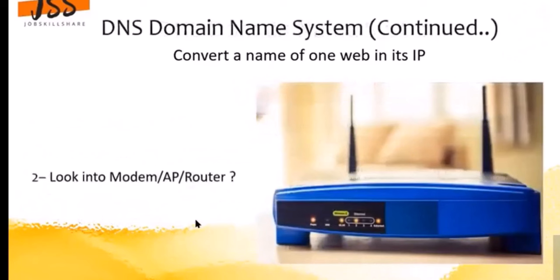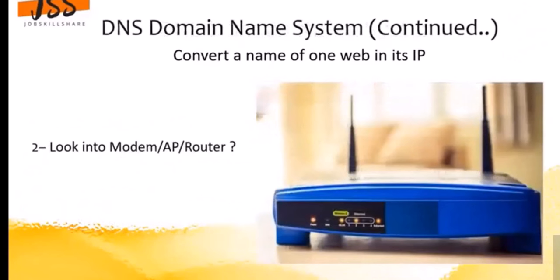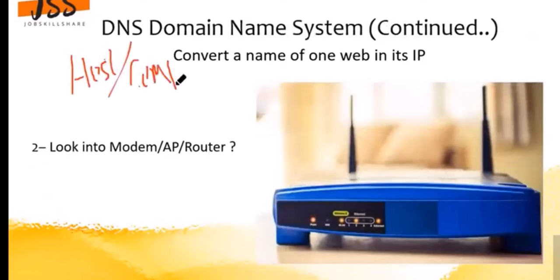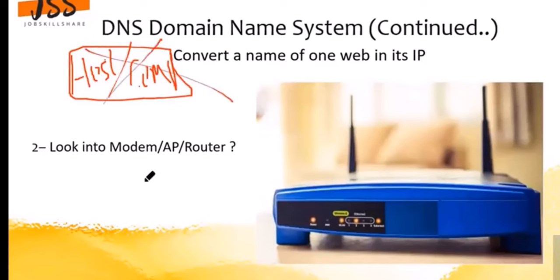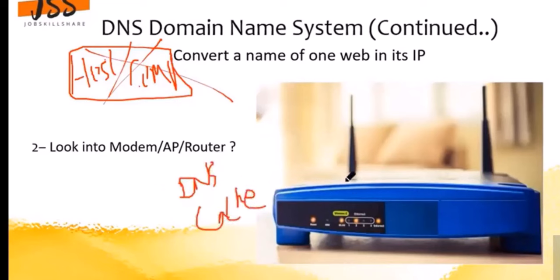The second stage is: if the hosts file on your computer does not have information about a particular website — let's say jobskillshare.org — the next thing it does is ask the router, because the router also has some kind of DNS cache. If the router has the information, it will directly give you a reply.